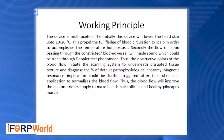Now we see the working and principle. This device is multiphased, meaning it has many features: tracer scanning, magnetic response, temperature regulatory path, and a Doppler sound tracer. When blood is obstructed by blocked vessels, this device produces a sound which can be traced through a Doppler test to find phenomenal and destructive points of blood flow. Destructive tissue textures are diagnosed by magnetic tracers, and implications can be further triggered by rubefacient, which normalizes blood flow and improves micronutrient supply for healthier hair follicles and pilocarpus muscles.